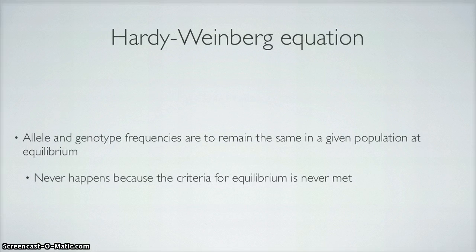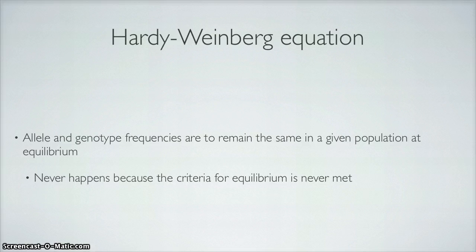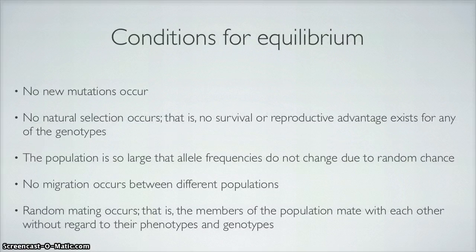The Hardy-Weinberg equation. The allele and genotype frequencies are to remain the same in a given population at equilibrium. The equation is P² + 2PQ + Q² = 1, which relates to allele and genotype frequencies. It is supposed to be used to predict equilibrium if no new mutations are formed — but this almost never happens, because the criteria are never met. Mutations are always occurring: single nucleotide polymorphic changes occur for every 2,000 to 3,000 base pairs copied, so that's 10 changes per 2,000 base pairs.